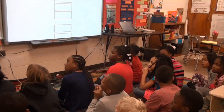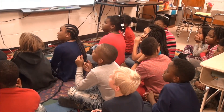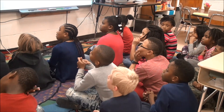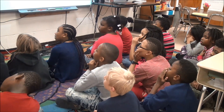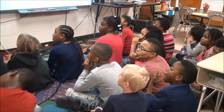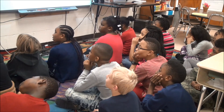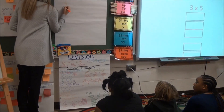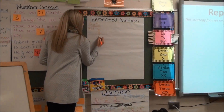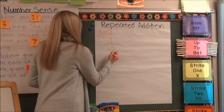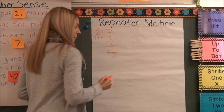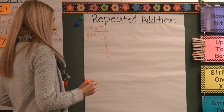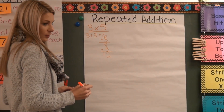3 plus 3 equals 6, and I have to add that 5 times. So 6 plus 3 equals 9, and 9 plus 3 equals 12. 12 plus 3 equals 15.